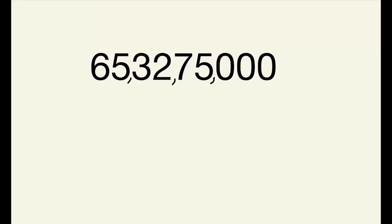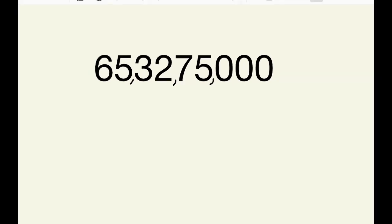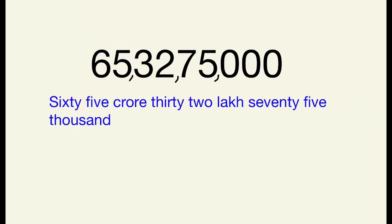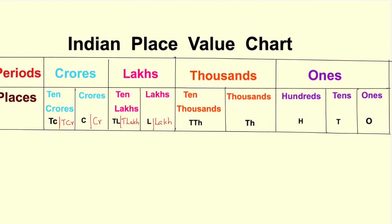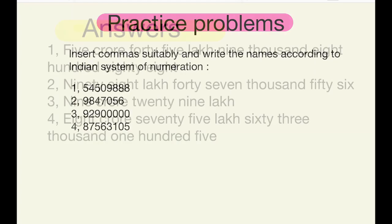Let us insert commas for another number. The first comma comes after hundreds place. The second comma comes 2 digits later, after ten thousands place. The third comma comes after another 2 digits, after ten lakhs place. In this number, the digits in the ones period are all zeros, so while reading and writing the number we ignore that period. The given number is 65 crore 32 lakh 75 thousand. Hope you learnt the Indian place value chart and how to insert commas for the Indian system of numeration. Try the practice problems and check with the given answers. Thank you.